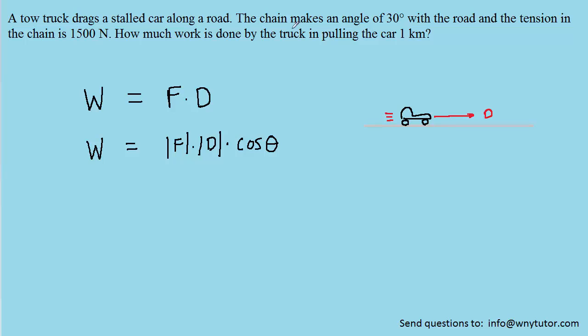and the question notes that this force, which is present by the tension that's existing in the chain, is making an angle of 30 degrees with the road. But the displacement vector is parallel to the road, so that means that the force vector can be drawn at a 30 degree angle to the displacement vector.